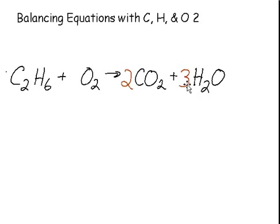Now we count up the oxygens on the right. We have two times two, which are four oxygens in here, and one times three, which is three oxygens in the water. So four plus three gives us seven oxygens on the right. You'll notice, if we look at the oxygens on the left, we only have two.